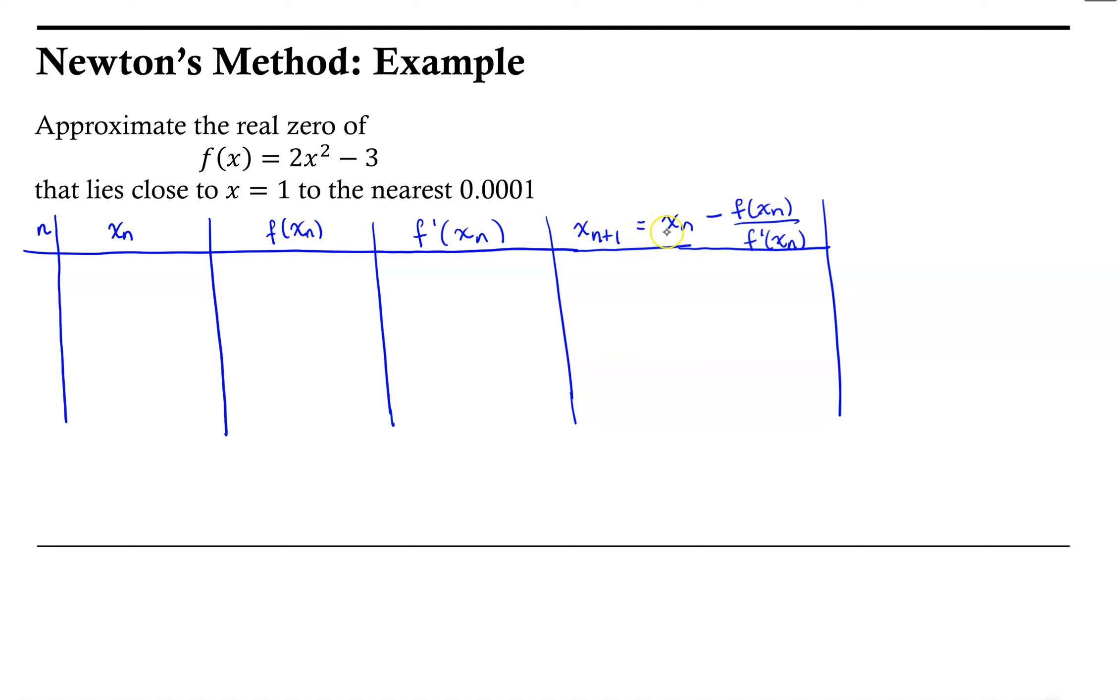So in this particular example, we were asked to approximate the real zero of this function that lies close to x equals 1. So we will choose for our initial guess, n equals 0, 1 is our initial approximation to the zero.